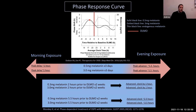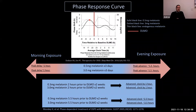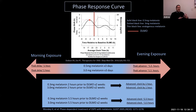A second study showed that 0.3mg and 3mg doses given two hours prior to DLMO for two weeks advanced the circadian clock by about one hour regardless of dose. Given 5.5 hours prior to DLMO for two weeks, both doses advanced the clock by a higher magnitude of about 2.5 hours — again with no difference based on dose. A good clinical summary: melatonin phase shifting appears to be time-dependent but not dose-dependent.